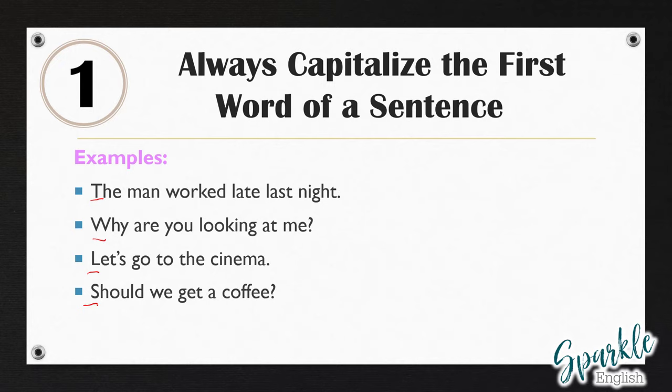Every time you end a sentence with whatever punctuation mark — whether it's a period or a question mark — when you begin a new sentence, you have to capitalize the first word. So if this sentence was 'The man worked late last night,' you would have a period, and the next sentence could be capital W: 'Where was he?' For example.